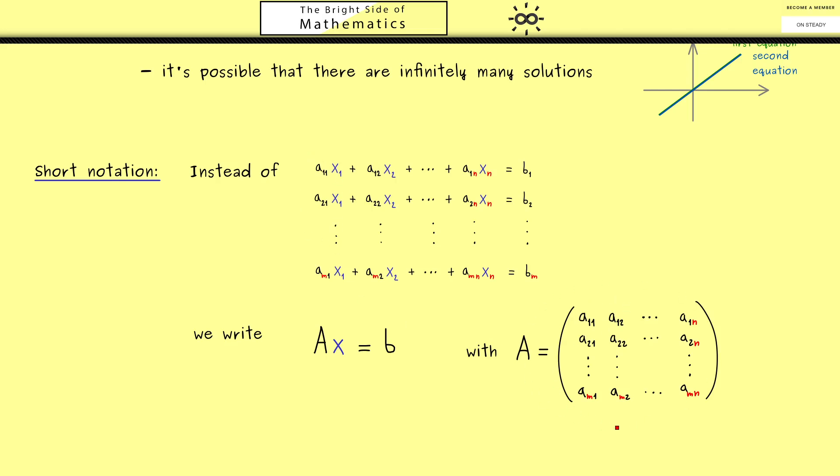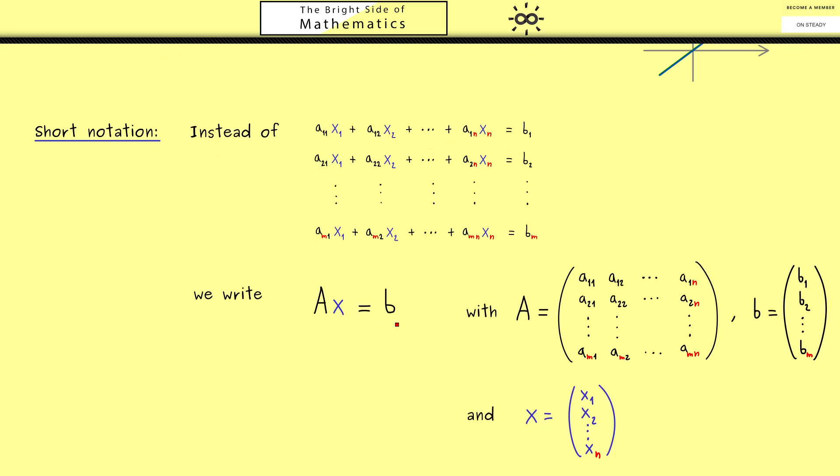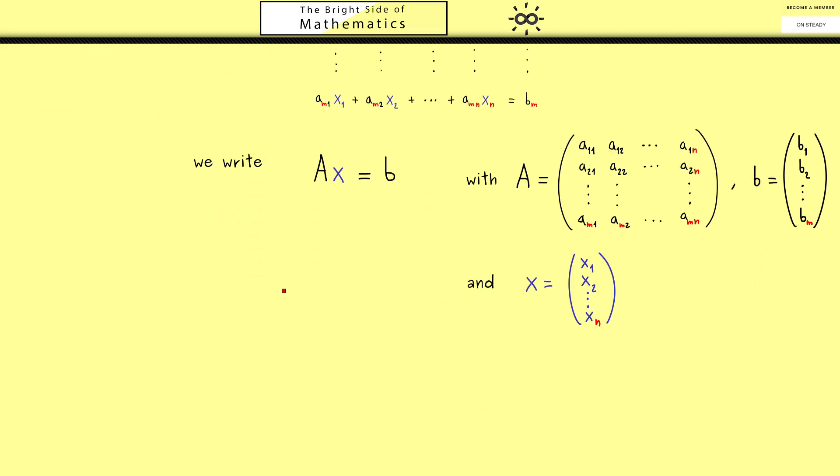And of course the matrix A here is defined in such a way that the coefficients lowercase a are the entries of the matrix. And of course what we want is that we have exactly the same order of the coefficients. And on the other hand the coefficients on the right hand side we can put into a vector b. So you see this all makes sense, it makes it shorter when we also put the unknowns into one vector x. However then please note the size of the vector x could be different than the size of the vector b.